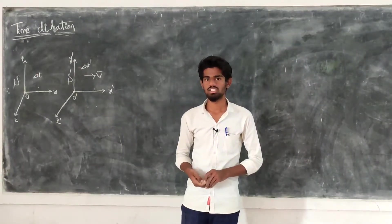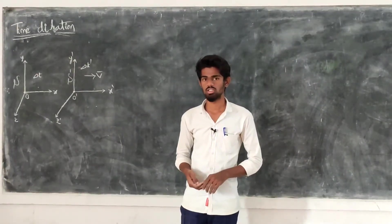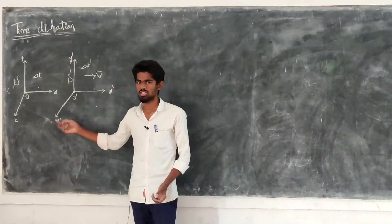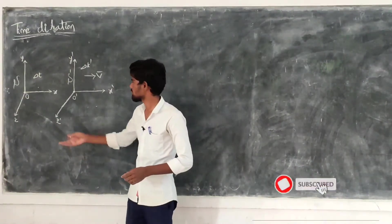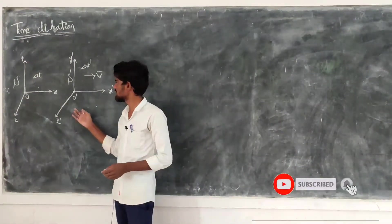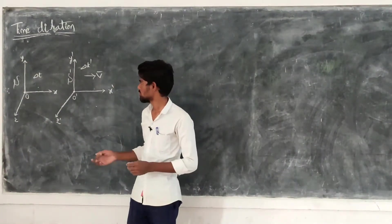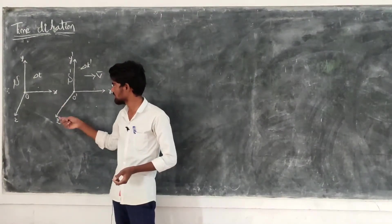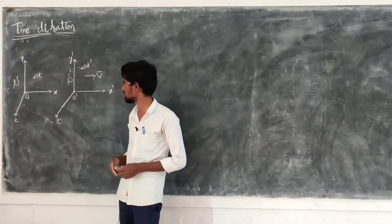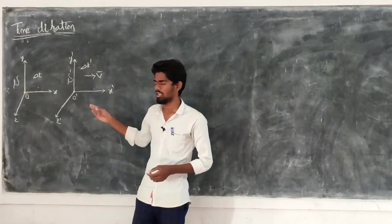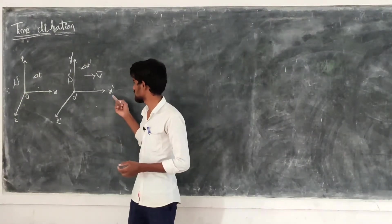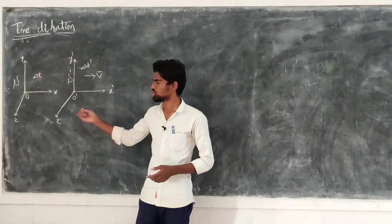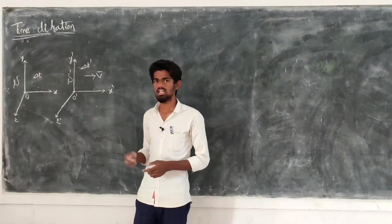Now we are going to explain time dilation. Time dilation considers two coordinate systems, S and S'. S is the coordinate system with X, Y, Z axes. S' is the coordinate system with X', Y', and Z' axes. S' is a moving frame.